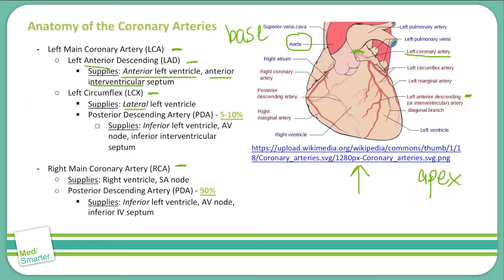Here's where things get a little tricky. There's something called the posterior descending artery, or the PDA. In five to ten percent of the population, the PDA branches off of the left circumflex artery, while in the other approximately 90 percent, it branches off the right main coronary artery — we'll discuss why that's important shortly. The PDA supplies the inferior part of the left ventricle, the AV node, and the inferior part of the interventricular septum.